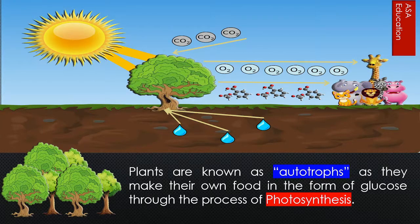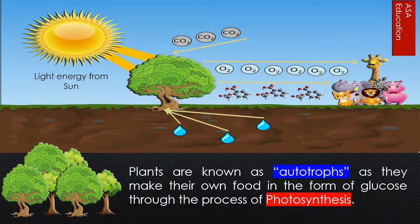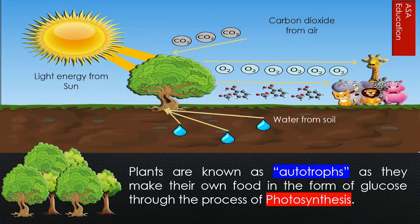Plants are known as autotrophs as they make their own food in the form of glucose through the process of photosynthesis. For this, they get light energy from the sun, carbon dioxide from the air, and water from the soil.